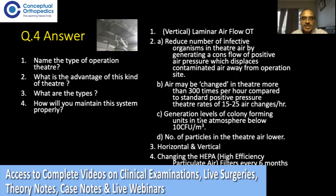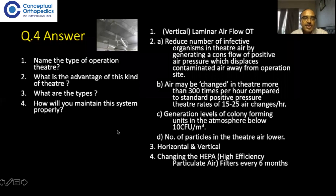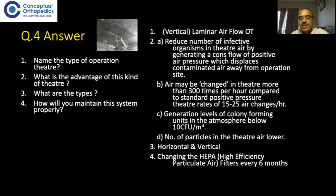There are two types of laminar airflow: horizontal, where units are mounted on side walls and require no major theater alteration, though horizontal laminar airflow is less effective; and vertical laminar airflow, which is the best. To maintain the system properly, the HEPA filters — high efficiency particulate air filters — must be changed every six months, and the whole system requires cleaning, so that the laminar airflow remains effective.